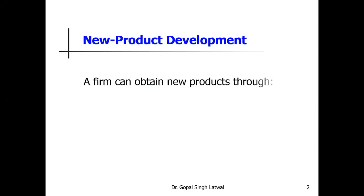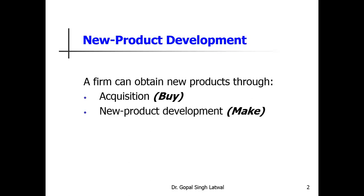Today in this lecture we will discuss the new product development processes. A new product is a product that is being introduced by the company or the organization to the world. The company can obtain a new product through two ways: one is acquisition, also known as 'buy,' and the second is new product development, that is 'make.' The company has only these two options available.